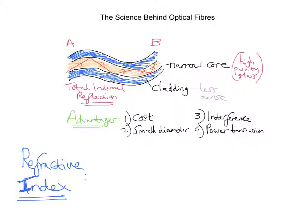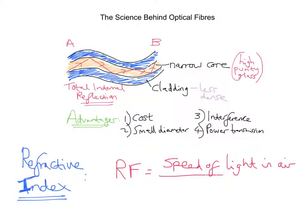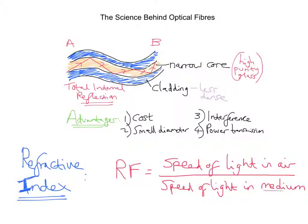For light waves, the refractive index is calculated using this formula. The refractive index (Rf) is equal to the speed of light in air divided by the speed of light in the medium. So Rf equals the speed of light in air divided by the speed of light in the reference medium.